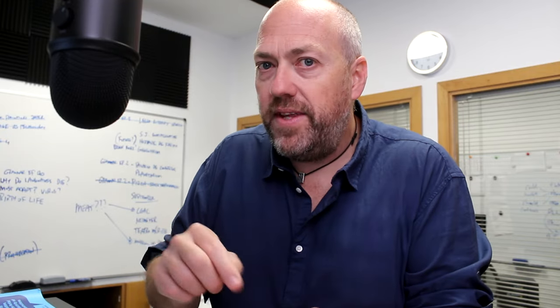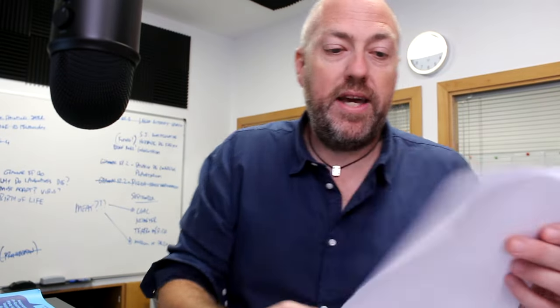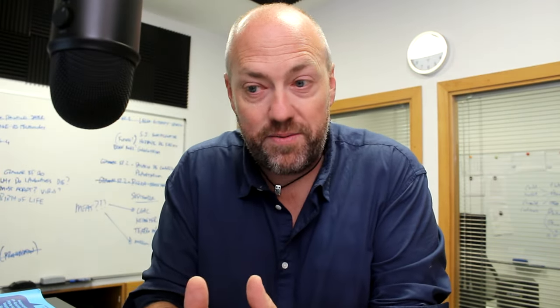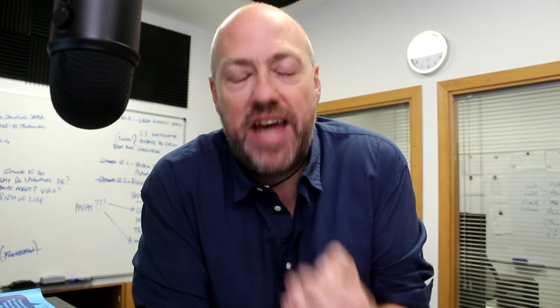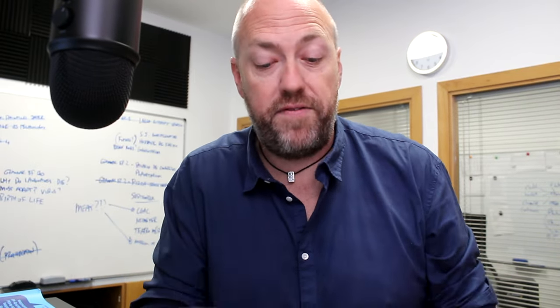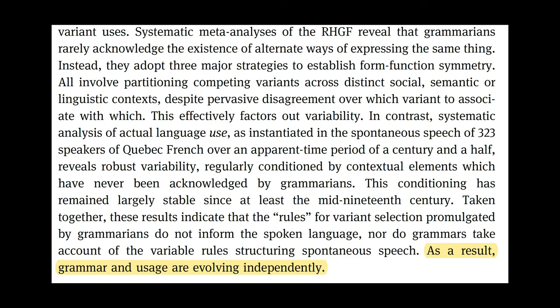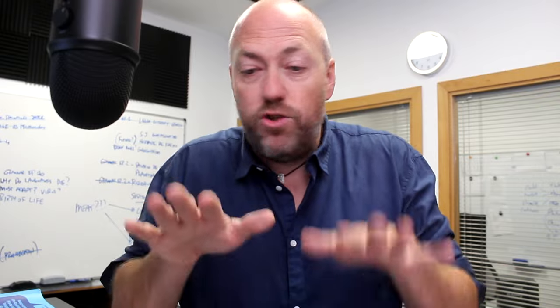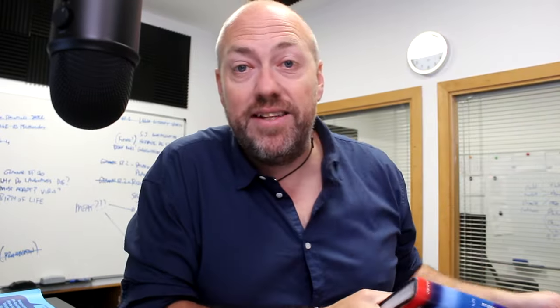Well, guess what? Here's the graph. As you can see, it's risen from 13% in the 19th century to 78% in the 21st century. So the French Academy are prescribing this rule — saying 'don't do this' — and yet the people are doing the exact opposite, and the increase is astronomical. And this is the conclusion from the abstract: grammar and usage are evolving independently. Everywhere they looked, they found the same thing — there's no relationship between what's in the grammar books and the reality of what people are doing.